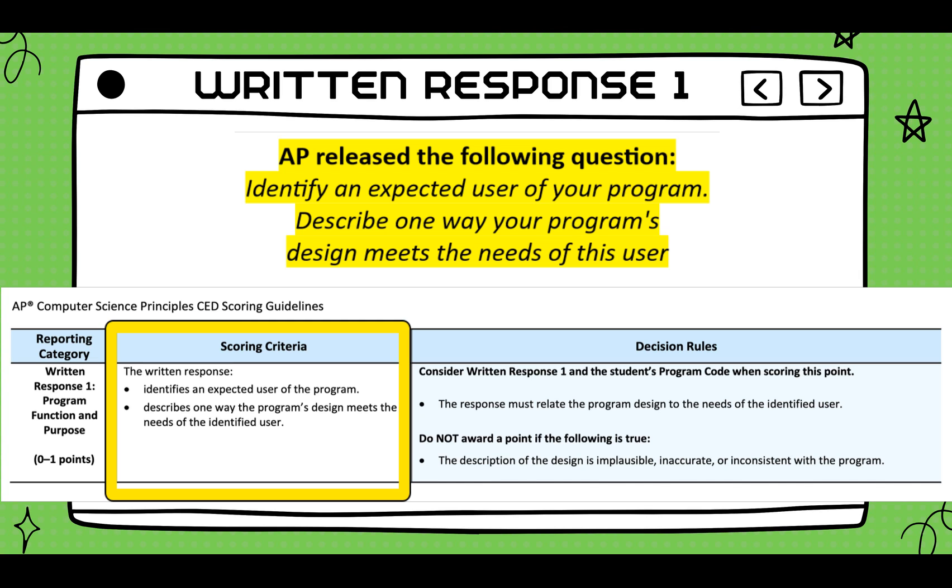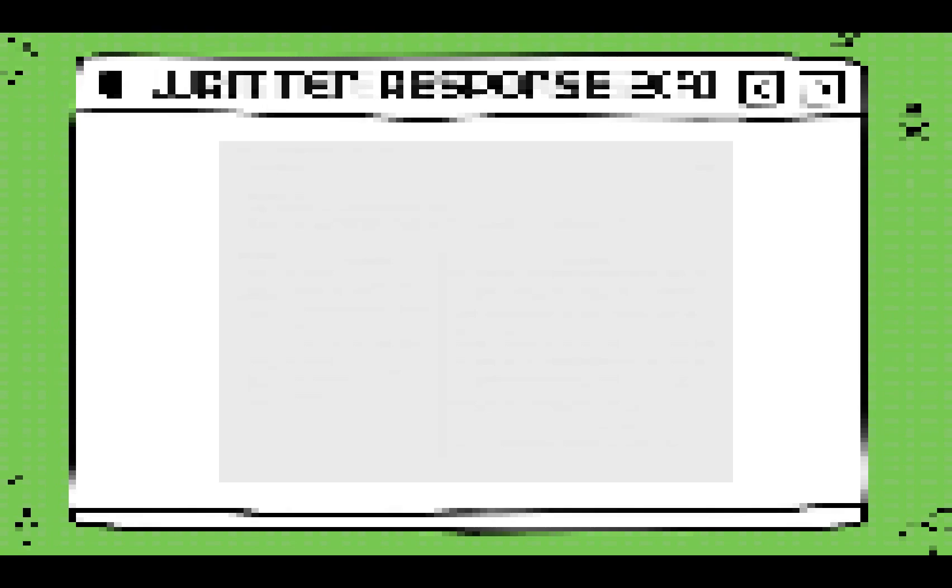AP released the following question: Identify an expected user of your program. Describe one way your program's design meets the needs of this user. To earn a point for this row, AP is expecting you to address two topics. First, what the actual problem your app is solving. And secondly, specifically, who would that be? Be precise. Do not be general. And again, do not describe what your app does. The fluffier the answer, the better. But be realistic.